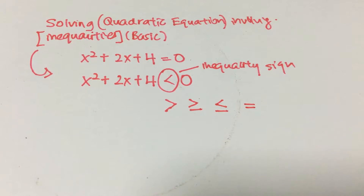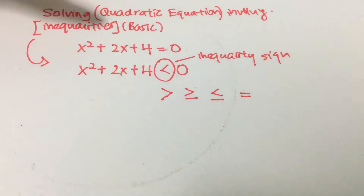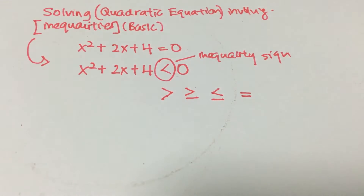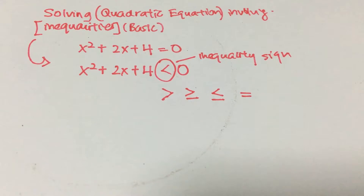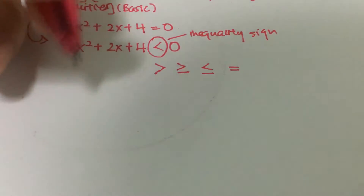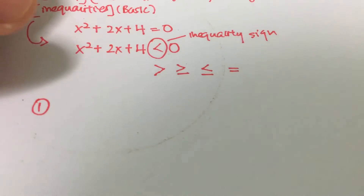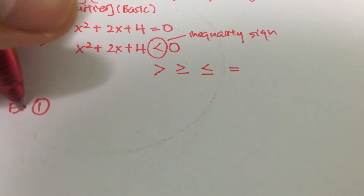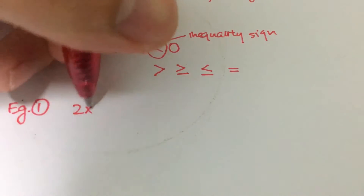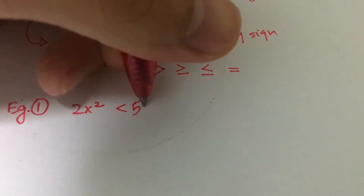Today's topic is basically straightforward — solving quadratic equations involving inequalities. Let's look at a particular example. Example one involves 2x squared smaller than 5x plus 3.